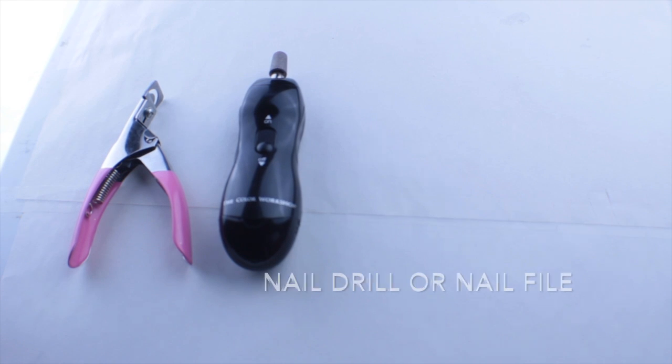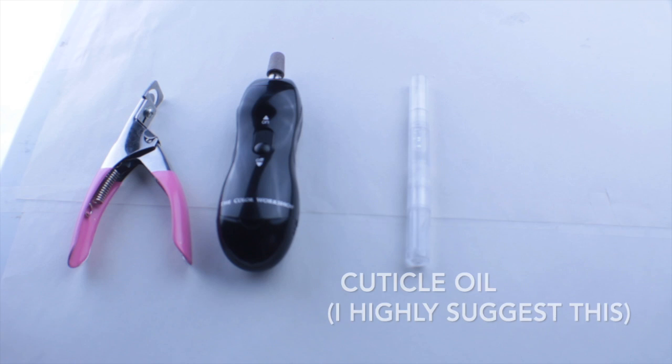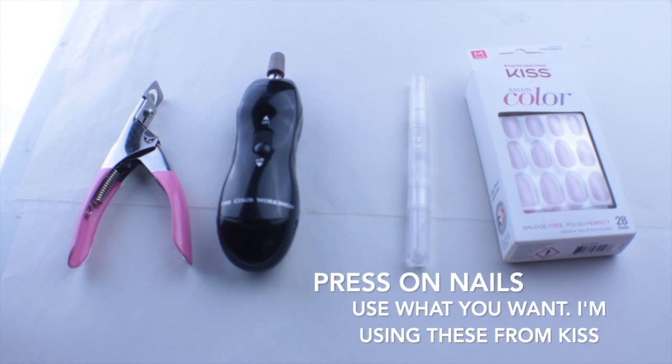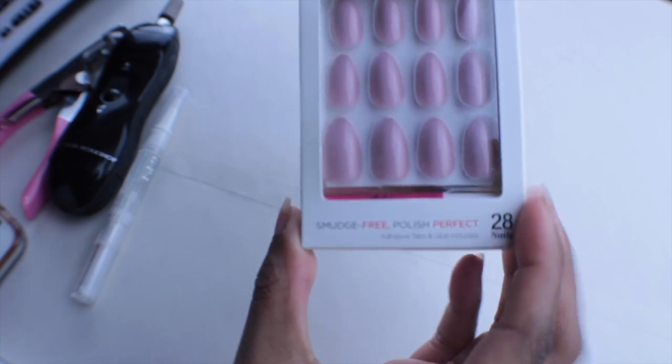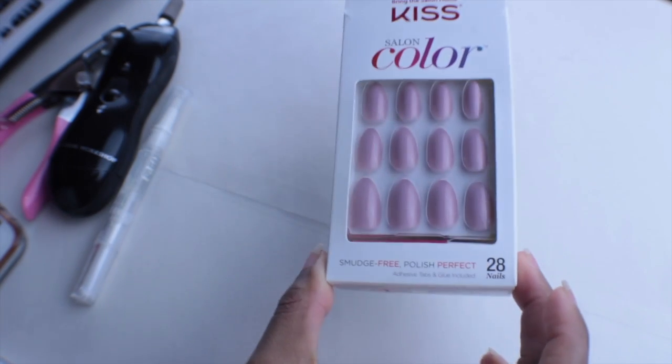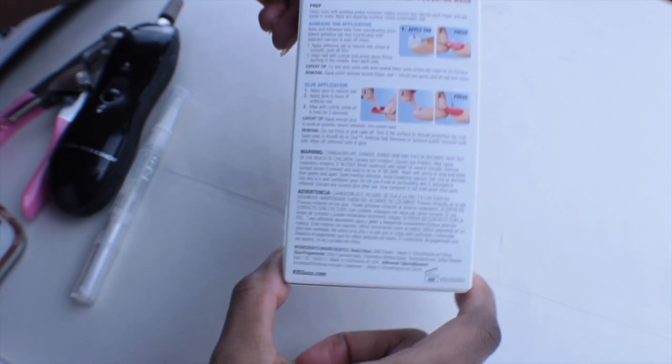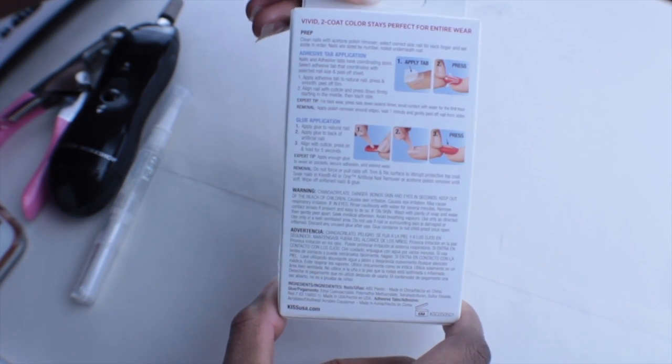They don't have to be like this, they can be the regular ones. A nail drill or a nail file, some cuticle oil which I highly suggest, and the press-on nails of your choice. Here are the press-on nails that I decided to use. These are from Kiss and they're just simple almond shaped. They have directions on the back.